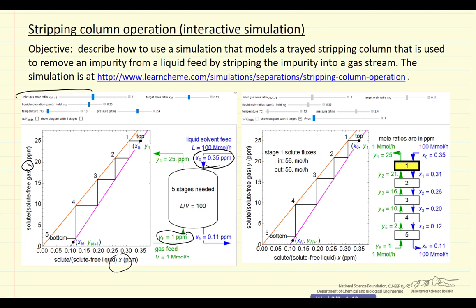The simulation allows you to change this value, the y-in plus one. It also allows you to change the x-zero value, the temperature, and the pressure, both of which affect the number of stages required. This is the target mole fraction we want to decrease from 0.35 to 0.11.